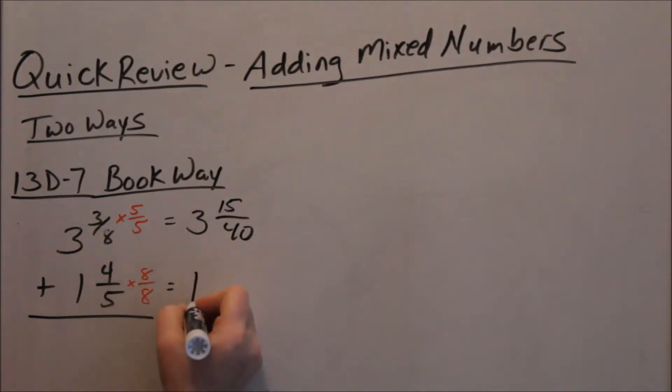Okay, leaving your big number, now multiplying these fractions, 4 times 8 is 32, 5 times 8 is 40.